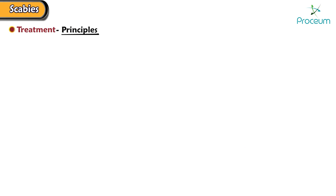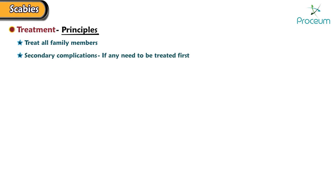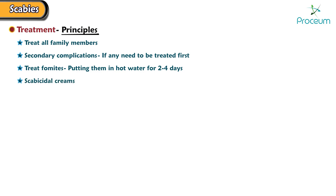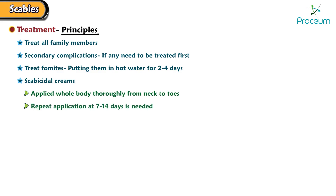Now let's go over the principles of scabies treatment. Treat all family members. Also treat secondary complications of scabies first if any need to be treated. Treat fomites by putting them in hot water for 2 to 4 days. Scabicidal creams should be applied to the whole body thoroughly from the neck to the toes, with repeat application for 7 to 14 days as needed.